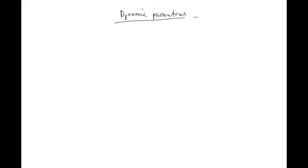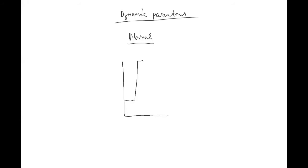Let's do the normal case. We're going to talk about FEV1, which is the forced expiratory volume for one second. Basically, you breathe out everything, then inhale as much as you can, hold the breath for a moment, and then blow out as fast and forced as you can.